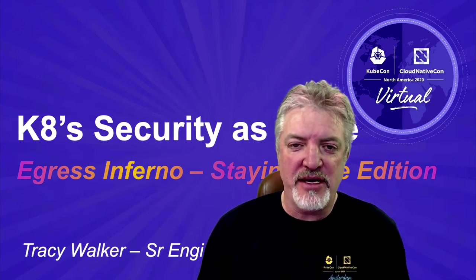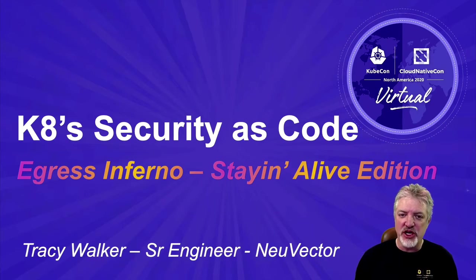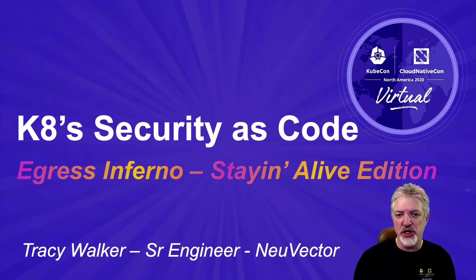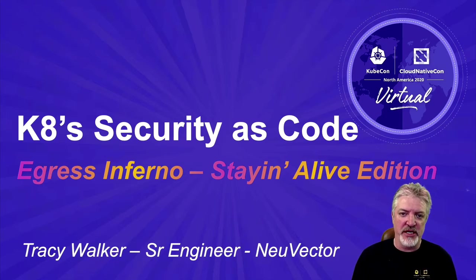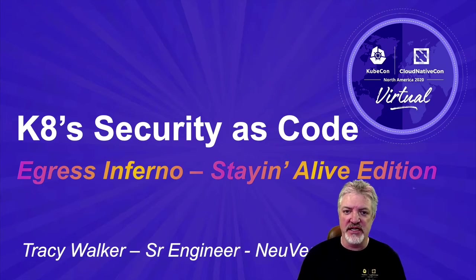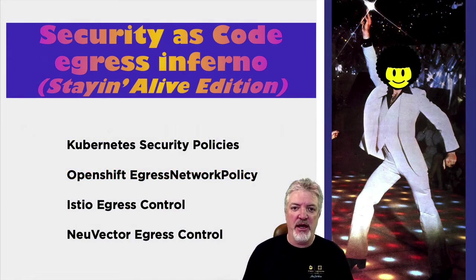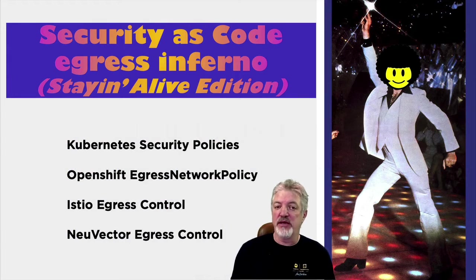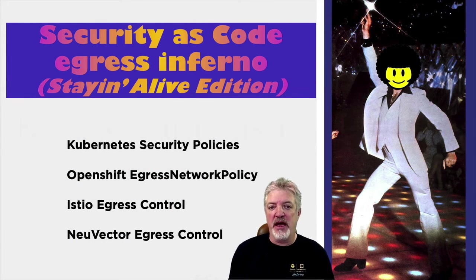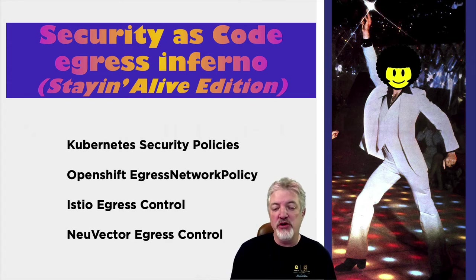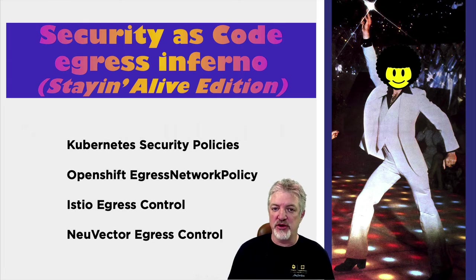Today I'm going to be talking about Kubernetes Security as Code. We're going to take one specific use case and compare it against different ways of implementing within a Kubernetes environment — those being Kubernetes Security Policies, OpenShift, Istio Egress Control, as well as NuVector Egress Control, which is a commercial approach to egress control.